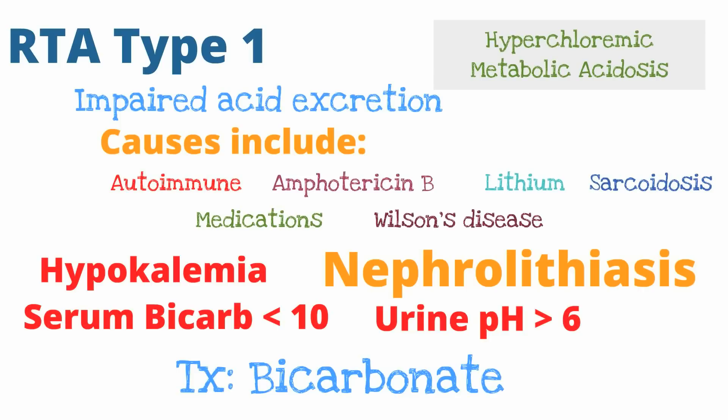Additional causes of RTA type 1 include sarcoidosis, other medications, and Wilson's disease. Laboratory findings include hypokalemia or low potassium. An important point in the patient's history is a history of kidney stones, otherwise known as nephrolithiasis, which are commonly seen in RTA type 1. The serum bicarbonate in RTA type 1 is less than 10 — a key distinctive factor — and the urine pH is greater than 6.